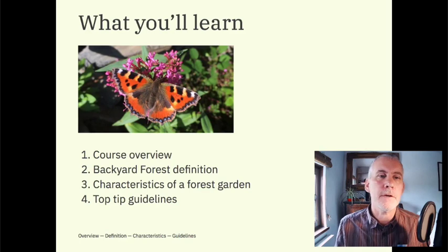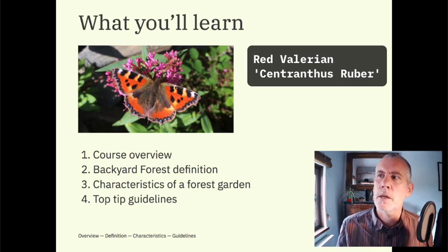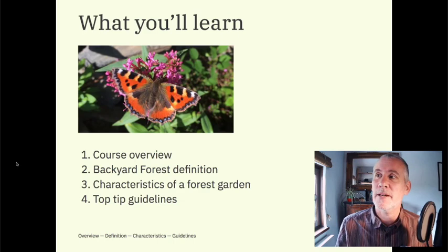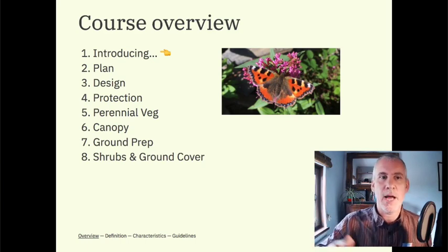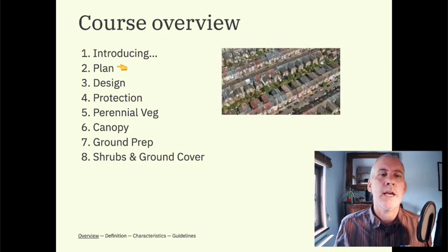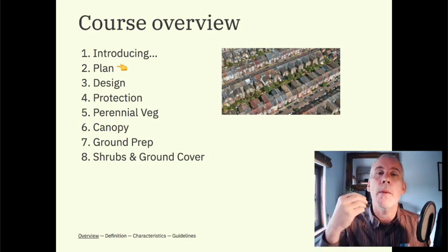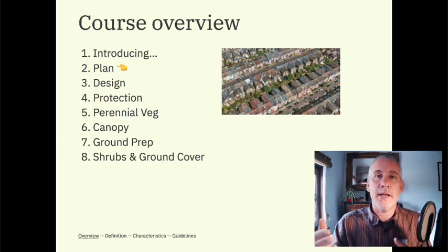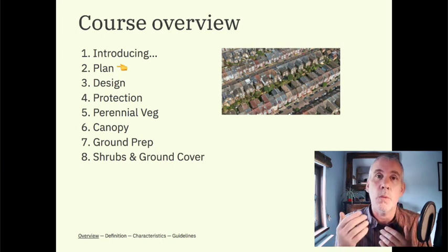Here's a peacock butterfly on Jupiter's beard - red valerian, Centranthus ruber - a forest garden plant with a bit of wildlife, just outside. The course overview: first, introducing the backyard forest online course - which is what I'm doing now. Second is the planning stage, looking at how to get observations for your particular site, different tools available, what observations to make, how to do a survey, and also figuring out what you want and what you're aiming for - getting clarity for your particular vision.